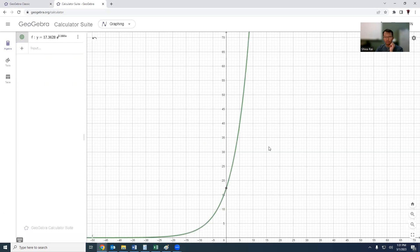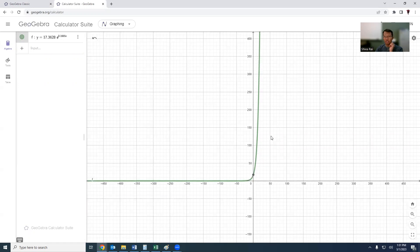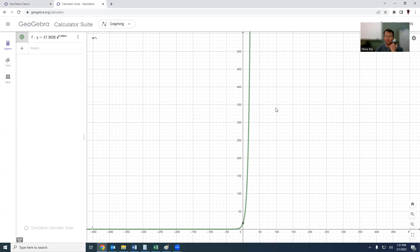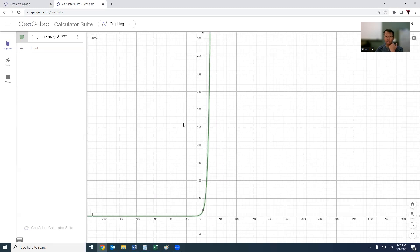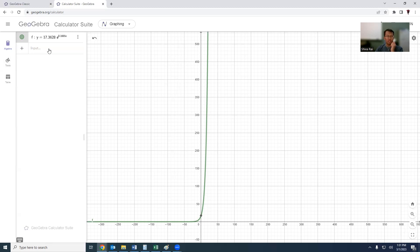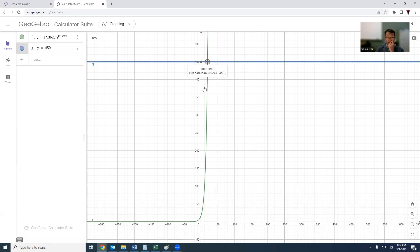Now since we have to find out in which year the assets will exceed 450 trillion, this is 450. X is the number of years and y is the assets, so let me input the value y equals 450. Here it is saying 19.549 for 450 trillion, so that's close to 20 years. In the year 2020 the assets will exceed 450 trillion.